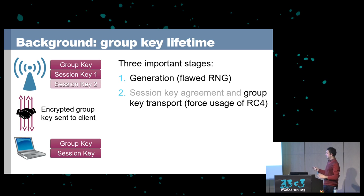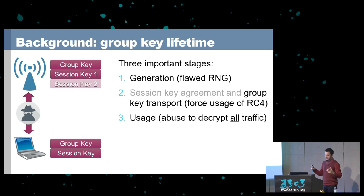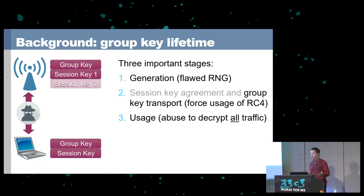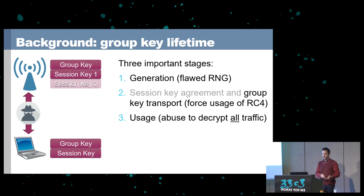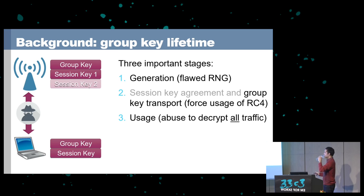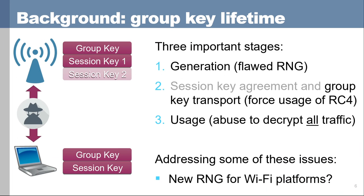The second part is when a client connects to the network it performs the four-way handshake to negotiate session keys — also called pairwise keys. During this handshake the group key is also transported to the client so it can decrypt broadcast and multicast traffic. We found that as a man-in-the-middle attacker we can manipulate this handshake to force use of RC4 for encrypting the group key during transmission. RC4 is an insecure cipher and we have an attack, currently theoretical, against how RC4 is used in this situation.